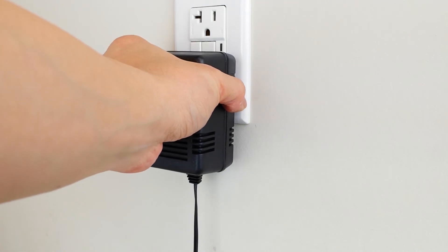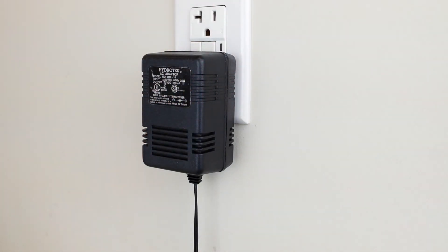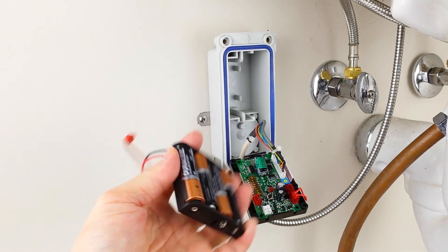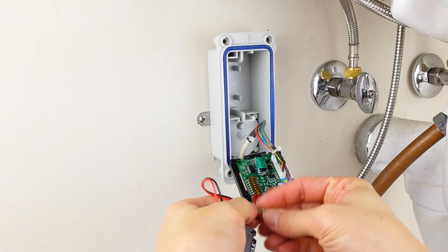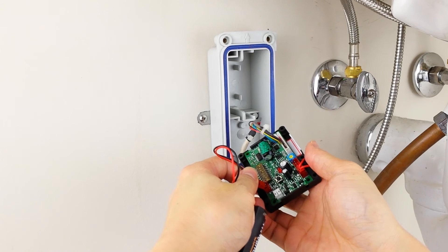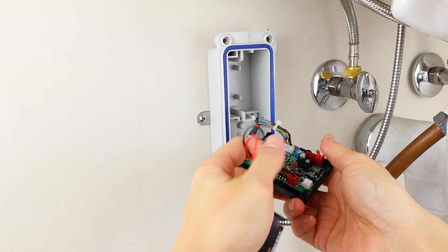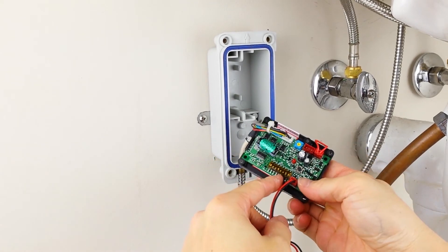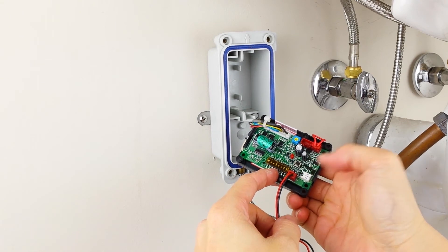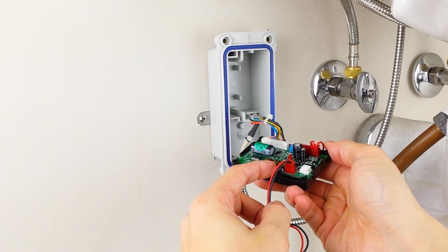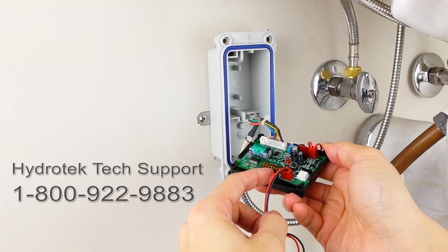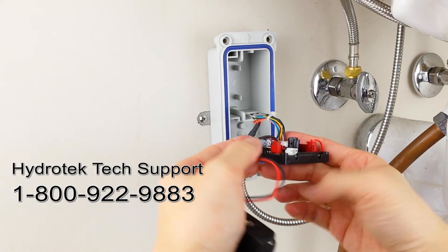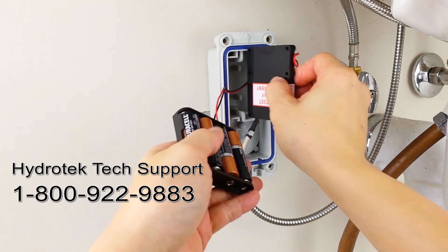Reconnect the power. On AC powered units, plug the wall adapter back into the wall. On battery powered units, plug the battery holder into the control module. Then press the reset button. The indicator LED on the control module will flash. If the LED does not flash, contact Hydratec Technical Support at 1-800-922-9883.